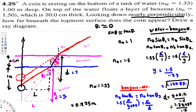So d ≈ 0.885 meters. That is the distance from the top surface of the benzene to the coin's apparent location. That's how we solve this type of optics problem. I hope you guys find this video helpful — see you next time!